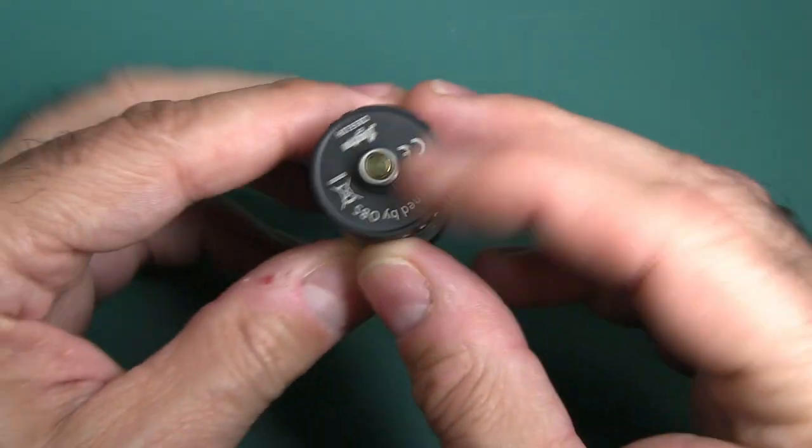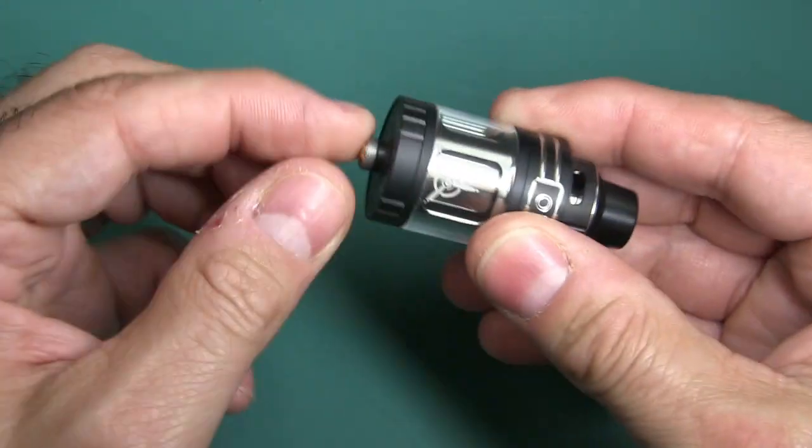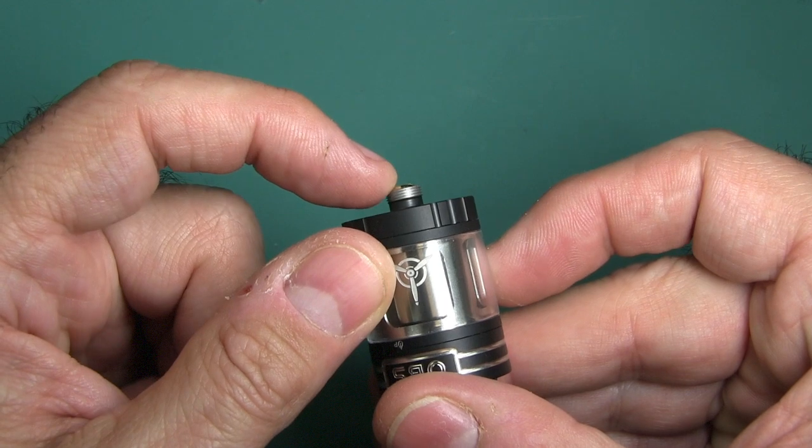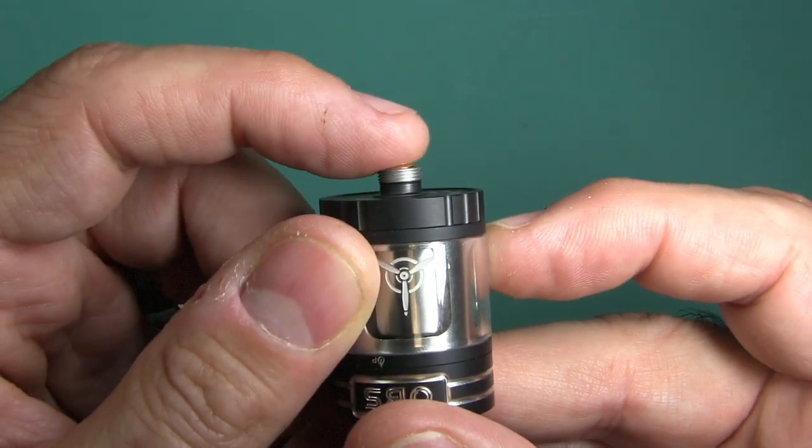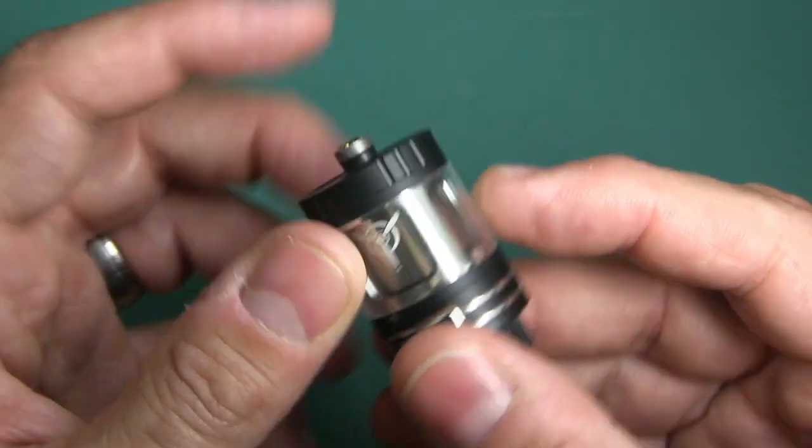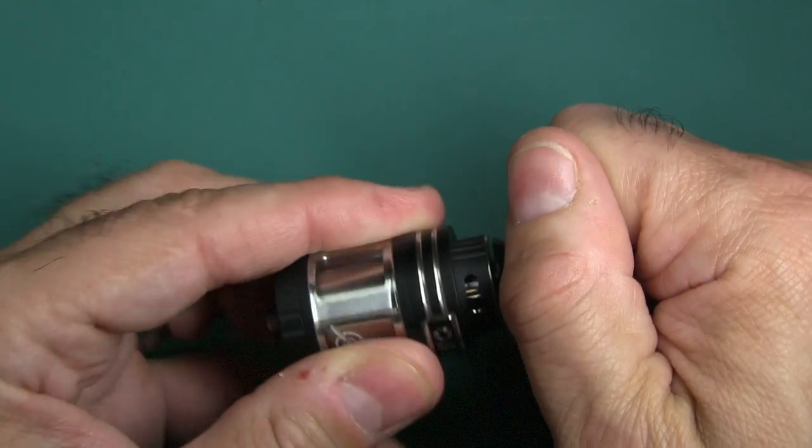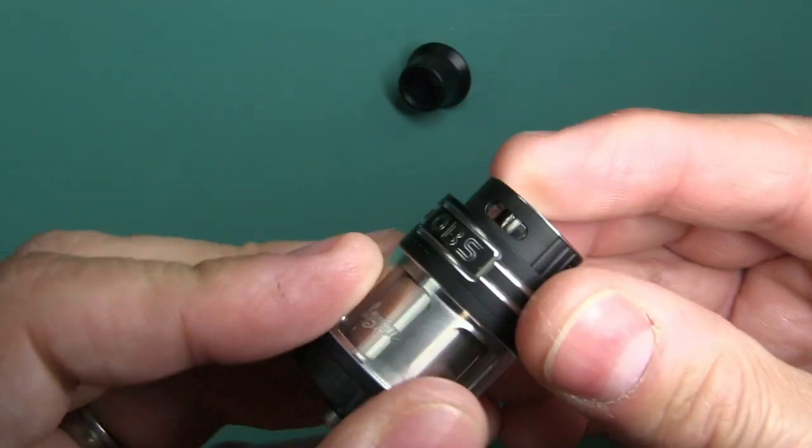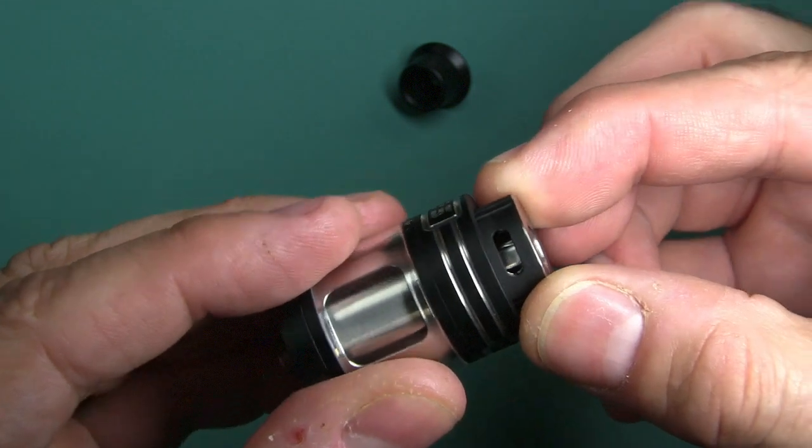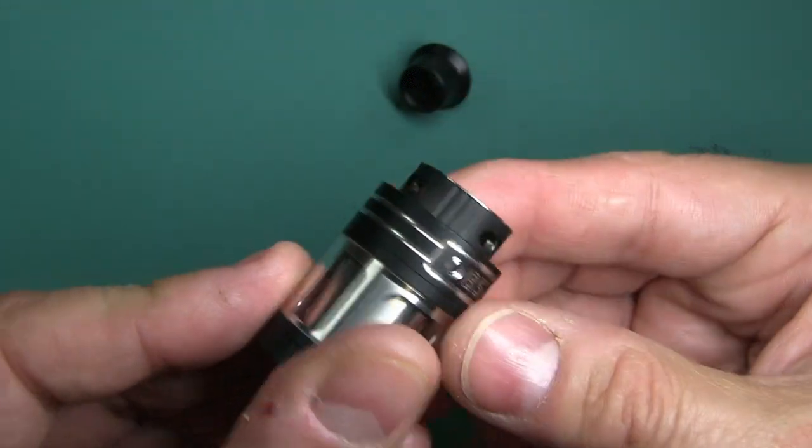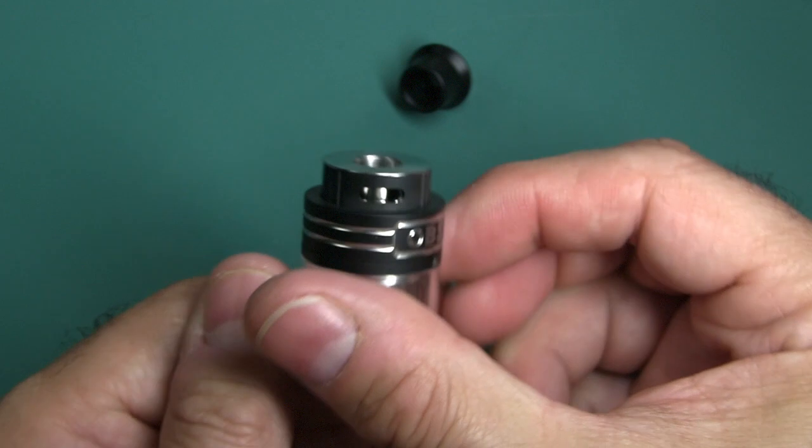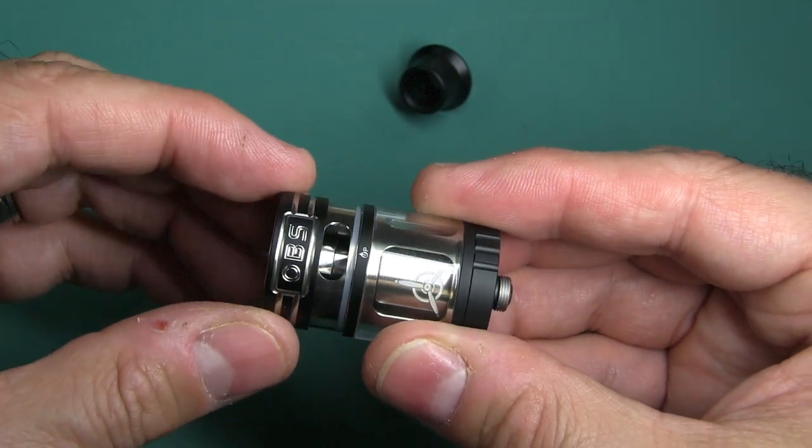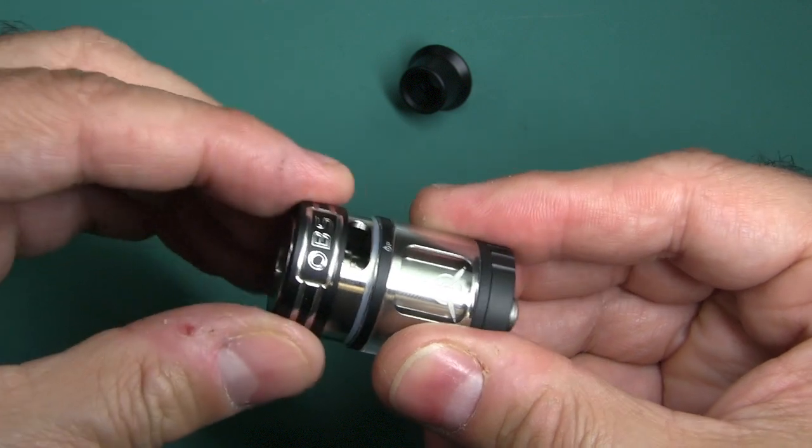You have the 510 threads right here. And you can see the pin here sticks out just a little bit so that's good. We already showed off the drip tip. For the airflow you have three holes and they all equally will close and open. And again to fill, you just pull this up, fill it, push it down.